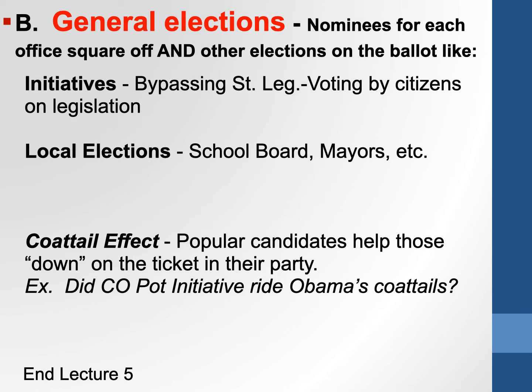In the general election, states across the country in the spring of an election year choose their nominee. We saw Trump was a no-brainer on the Republican side, and the Democratic Party got behind Joe Biden. The nominees then meet in the general election. On a general election ballot there's a senator, House representatives, possibly an initiative like gambling, and local school board elections.